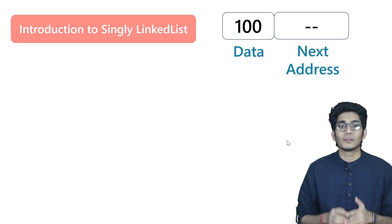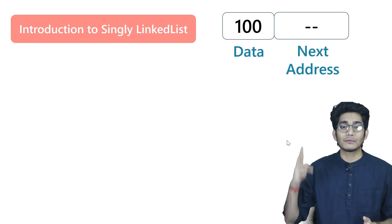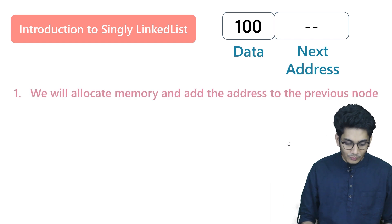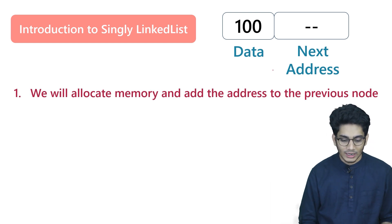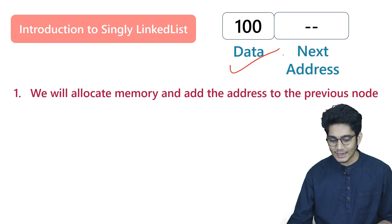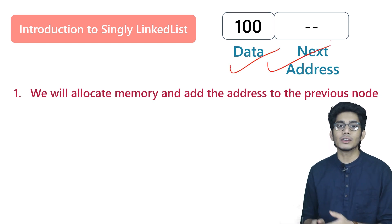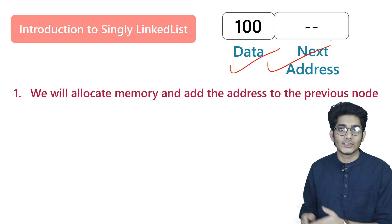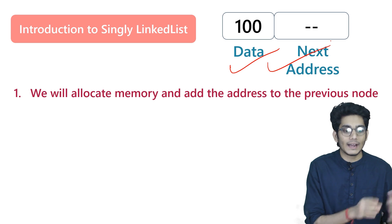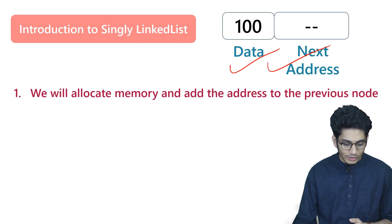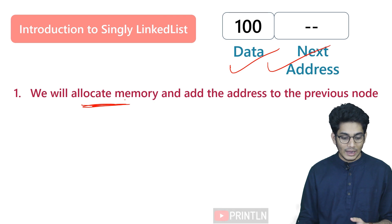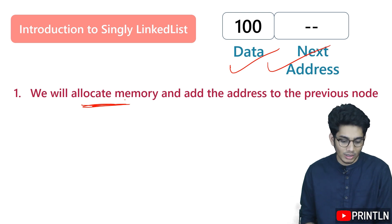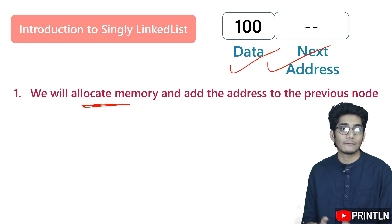In the last video we discussed that a particular node has two parts: one is data and the other is address. So first, what we have to do is allocate memory for a particular node. This node has two parts — the first part is data and the other part is the next address, which stores the address of another node. To allocate memory we need to use dynamic memory allocation — malloc or calloc.